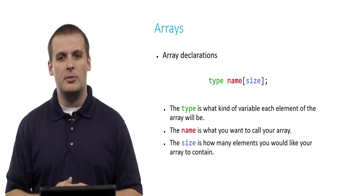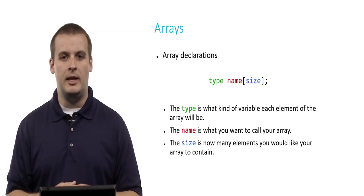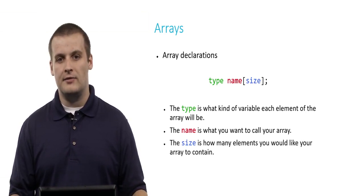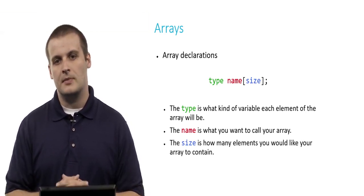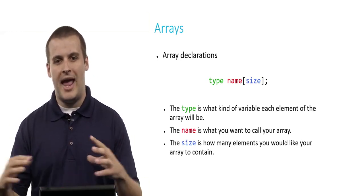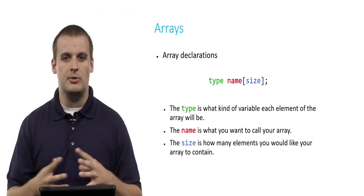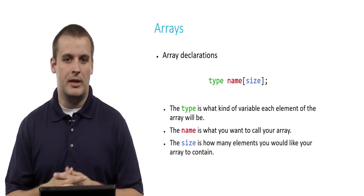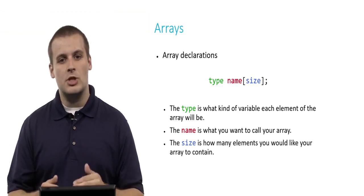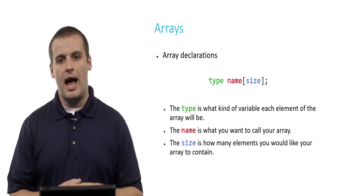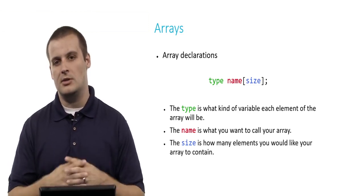The type is what kind of variable you want each element of the array to be. If you want an array of integers, your data type should be int. If you want an array of doubles or floats, the data type should be double or float. The name is what you want to call your array. Lastly, the size, which goes inside square brackets, is how many elements you would like your array to contain — how many integers or floats you want.